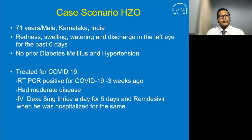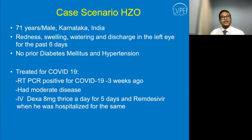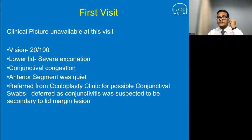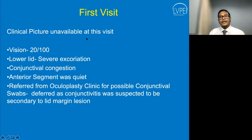The next patient had herpes zoster ophthalmicus in the post-COVID convulsions: a 71-year-old male from Karnataka with redness, swelling, watering, and discharge in the left eye for six days. He was RT-PCR positive for COVID-19 three weeks prior, had moderate disease, was treated with IV steroids and remdesivir, and was hospitalized. Vision was 20/200 with severe excoriation of the lids, conjunctival congestion, and a quiet anterior segment. He was referred for a conjunctival swab with suspicion of a secondary lid margin lesion.